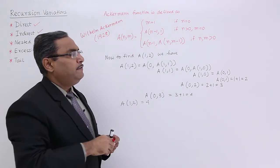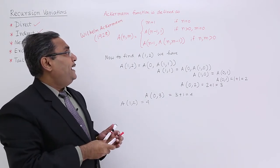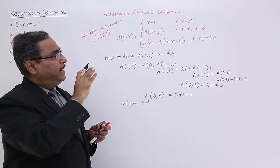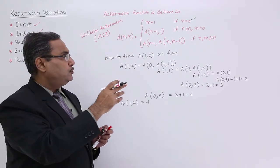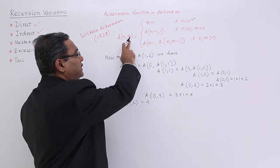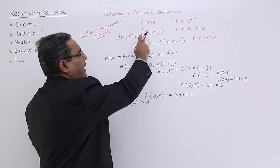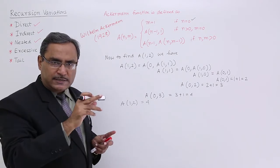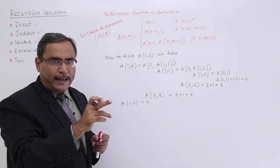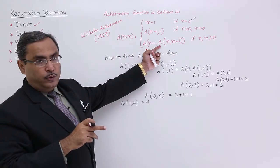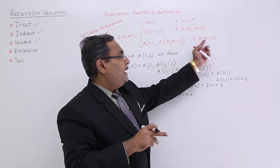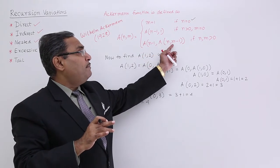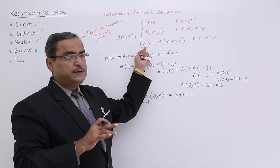A(n, m) will have the value m + 1 if n is equal to 0. But if n is greater than 0 and m is 0, then we go for recursion: A(n-1, 1). Otherwise, if both n and m are non-zero, then A(n-1, A(n, m-1)) — the output of the inner call becomes the input argument for the outer call.